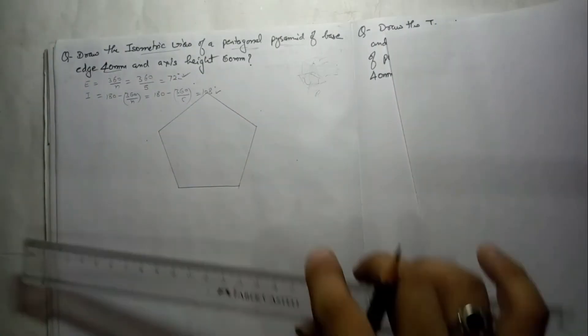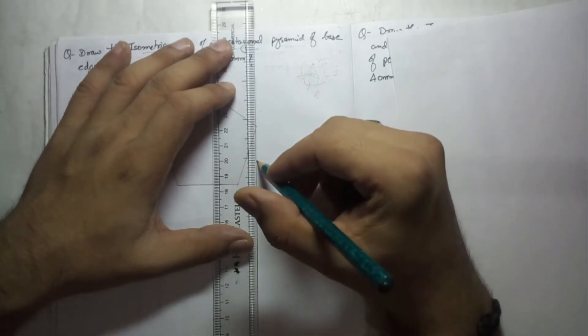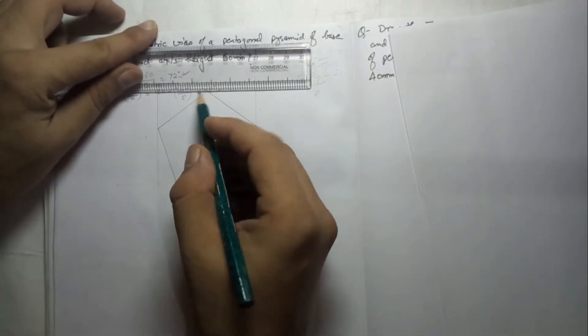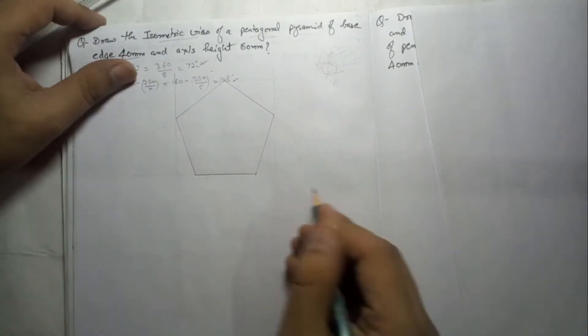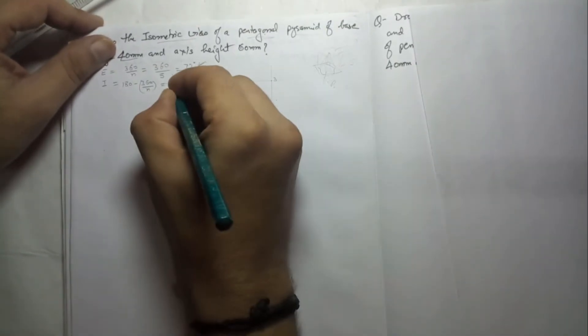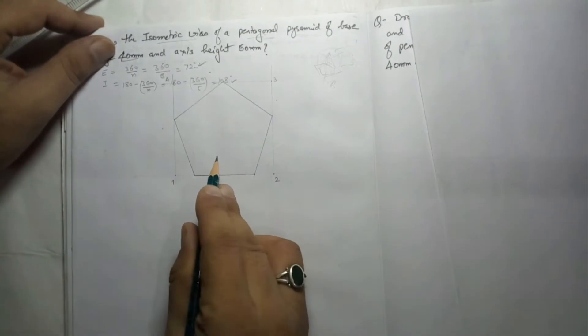Now we have to draw this pentagon on the isometric axis, but we cannot do it directly. First we enclose it in a box. From the base we extend the line, then extend vertically on each side and horizontally at the top to get a rectangle. I name the rectangle corners 1, 2, 3, and 4 — our pentagon sits inside rectangle 1-2-3-4. On the isometric axis we draw this rectangle first, then copy the pentagon into it.